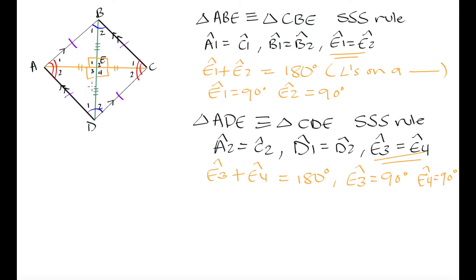We have now proven that in a rhombus, the diagonals intersect at 90 degrees — they are perpendicular bisectors of one another. The diagonals bisect each other at 90 degrees, creating four 90 degree angles at their intersection.